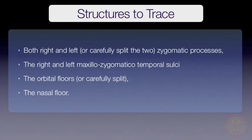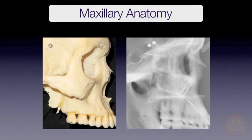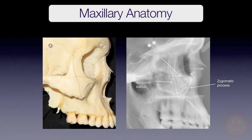Based on what's been said so far, the structures that need to be traced for maxillary superimpositions are the right and left zygomatic processes, the right and left maxillozygomaticotemporal sulci, the orbital floors, and the nasal floor. These structures can all be identified on lateral cephalograms. Start by tracing the zygomatic process and the maxillozygomaticotemporal sulci, then trace the orbital floor and identify orbitale. Remember, these structures are bilateral, so you will have to identify both sides and trace the midline between them. Next, trace the nasal floor.